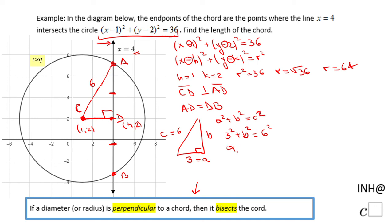3² is 9, so 9 + b² = 36. To find b², subtract 9, giving us b² = 27. So b = √27, which can be simplified as √(9×3) = 3√3. This b is the segment AD, so AD = 3√3.